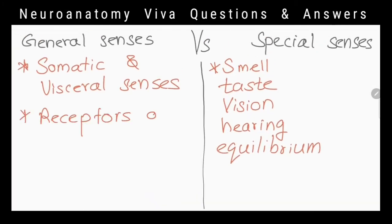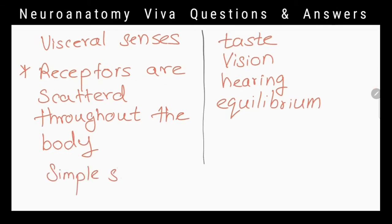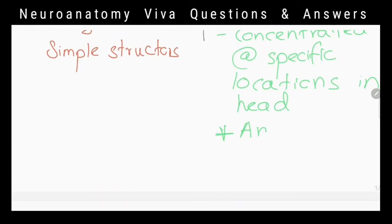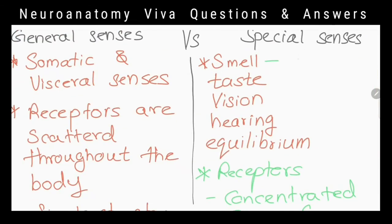vision, hearing and equilibrium. The receptors of general senses are scattered throughout the body and they have simple structures. While the receptors of special senses are concentrated in specific locations in the head. They are anatomically distinct structures and they have complex neuron pathways. What cranial nerve damage can cause anosmia?